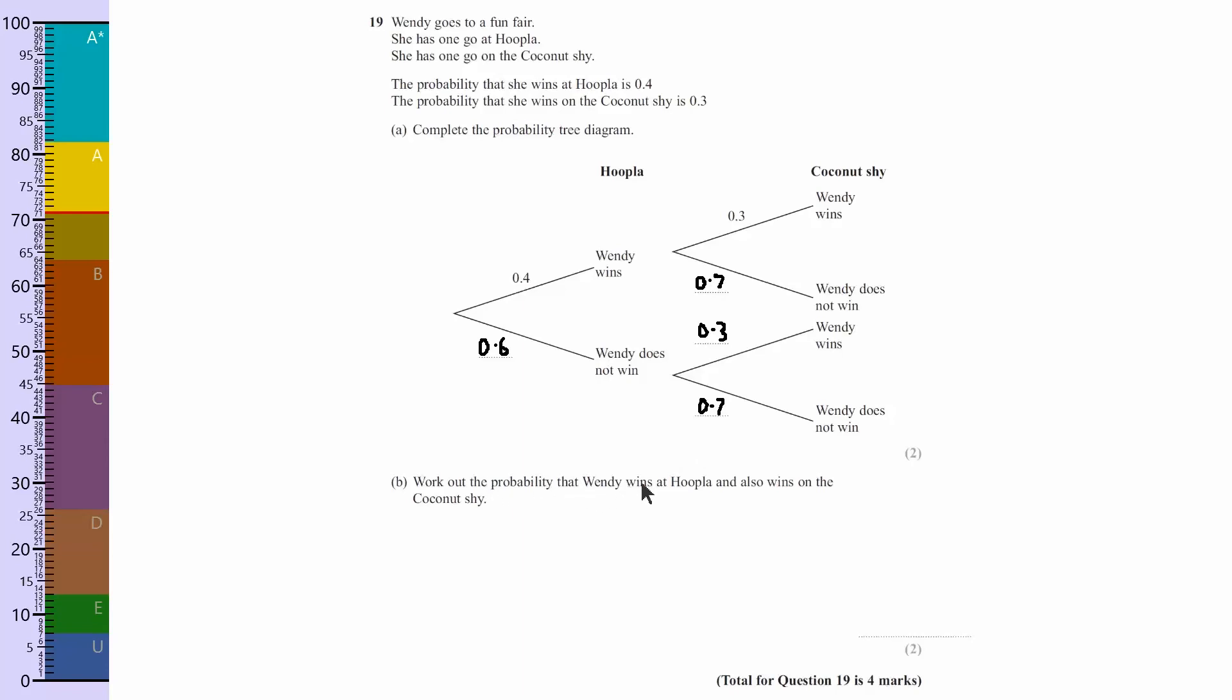Then it says work out the probability that Wendy wins at hoopla and also wins on the coconut shy. So Wendy wins, if I get the... Wendy wins, it's this one here. So she wins at the hoopla and then she also wins at the coconut shy, so it's this one and this one. Okay, so let's write that down.